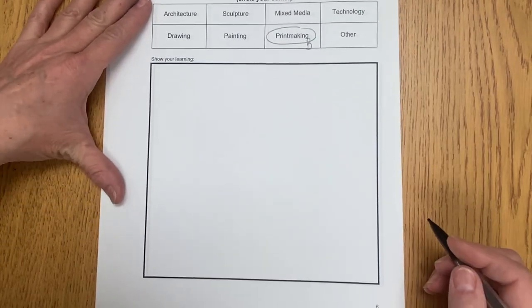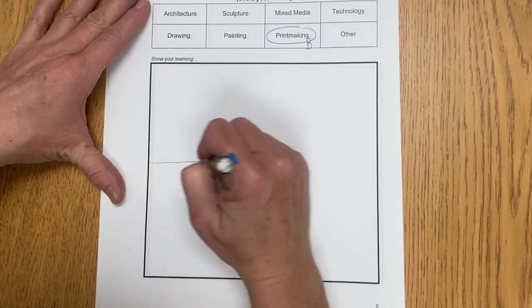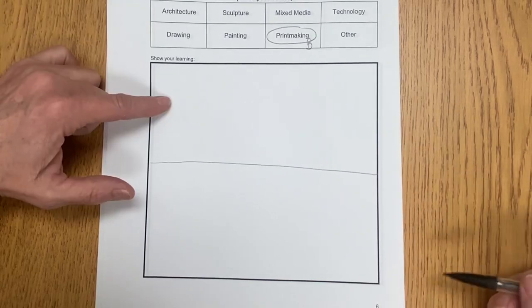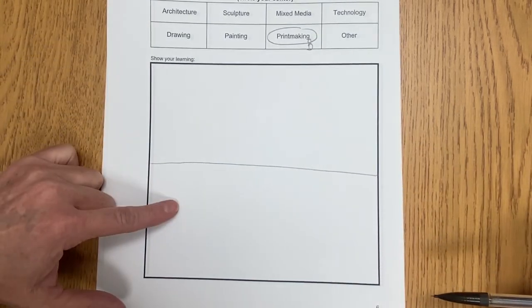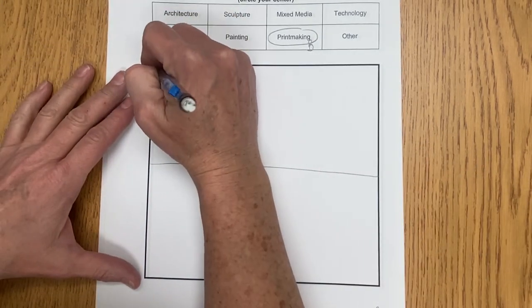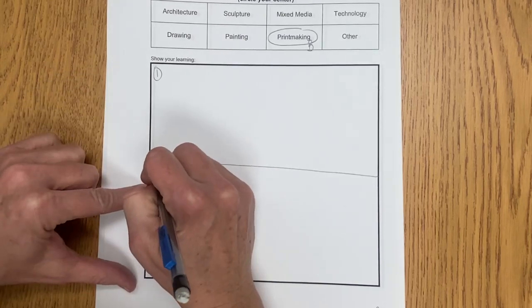Now I like to split my paper in half to start with so that I can remember which one is my practice and which one is my really good one. I'm going to number the top section one, number the bottom section two.